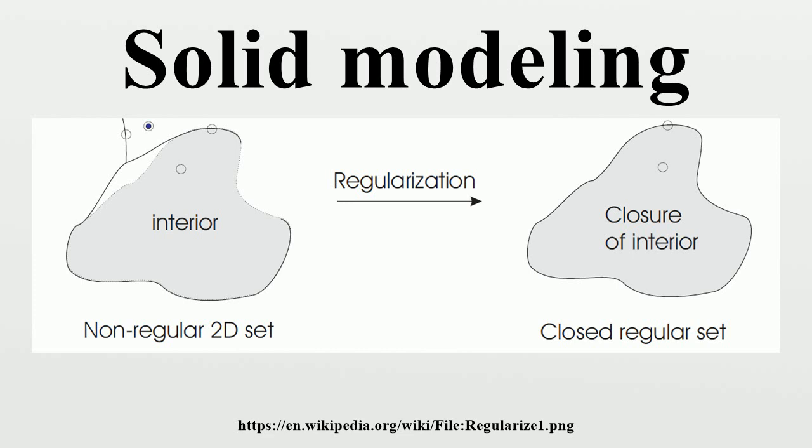Spatial occupancy enumeration: This scheme is essentially a list of spatial cells occupied by the solid. The cells, also called voxels, are cubes of a fixed size and are arranged in a fixed spatial grid. Each cell may be represented by the coordinates of a single point, such as the cell's centroid. Usually a specific scanning order is imposed and the corresponding ordered set of coordinates is called a spatial array. Spatial arrays are unambiguous and unique solid representations but are too verbose for use as master or definitional representations.